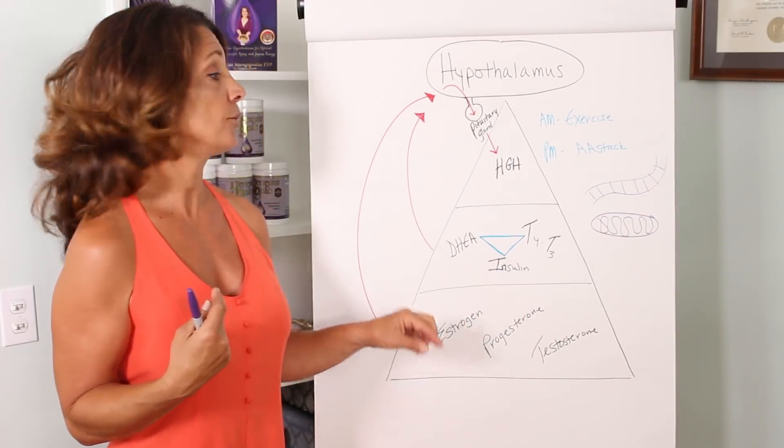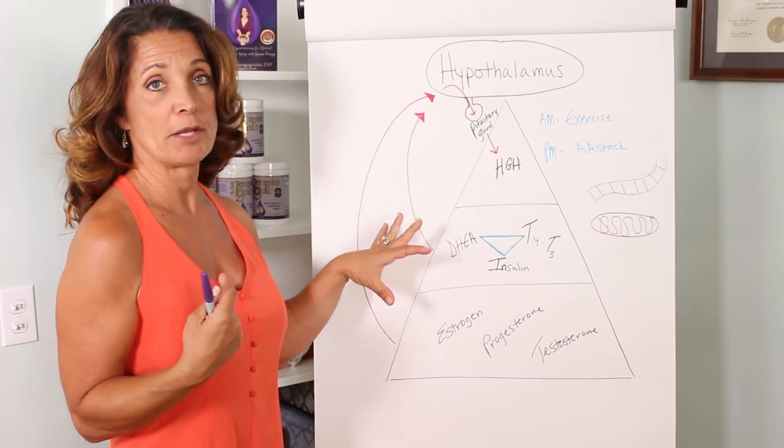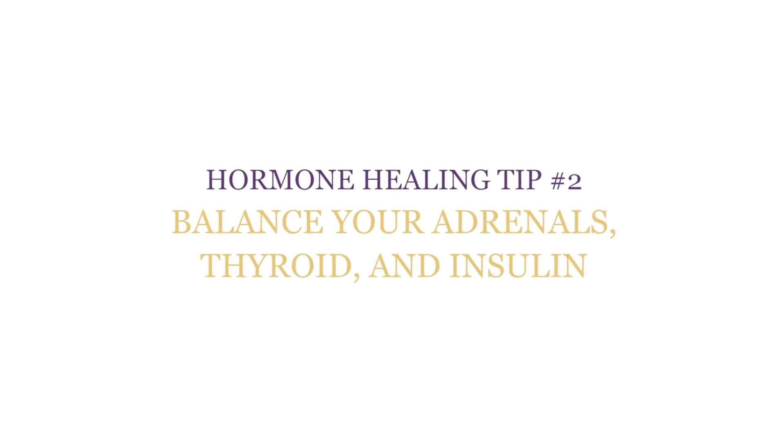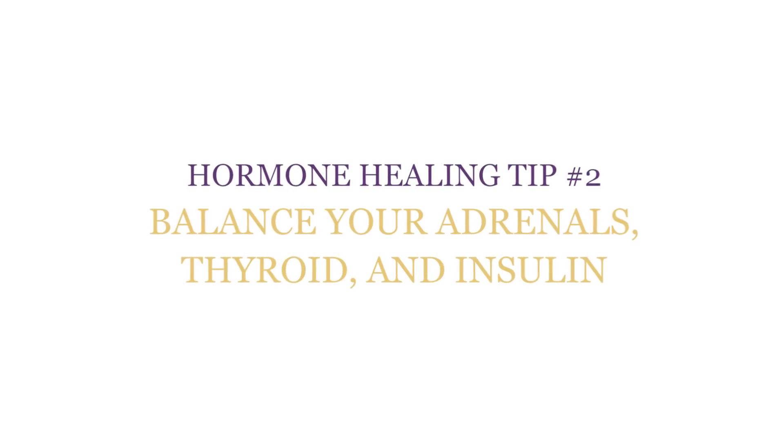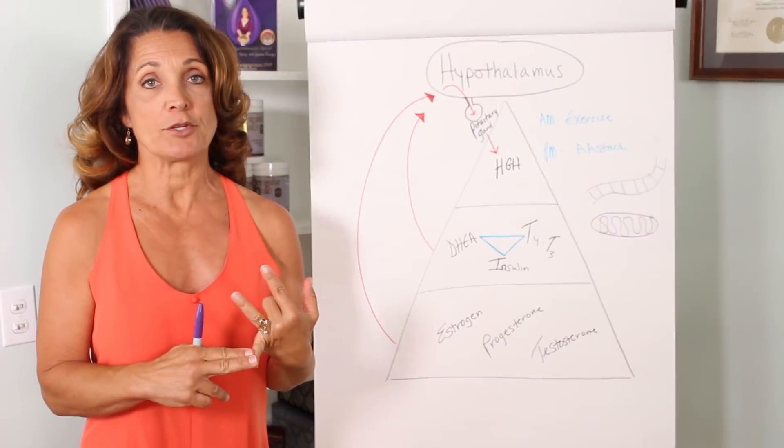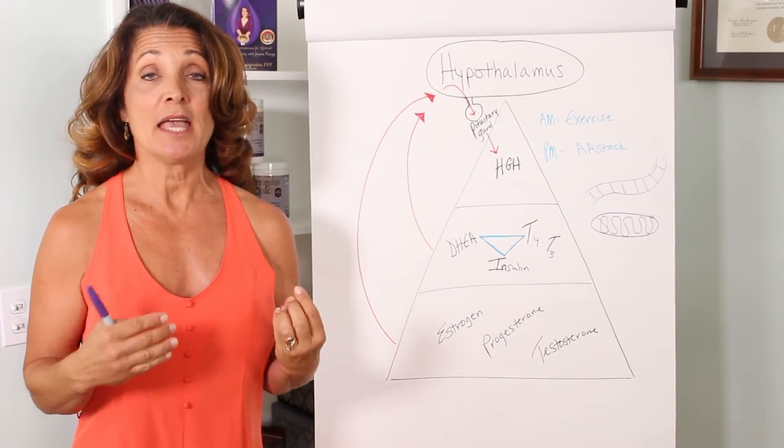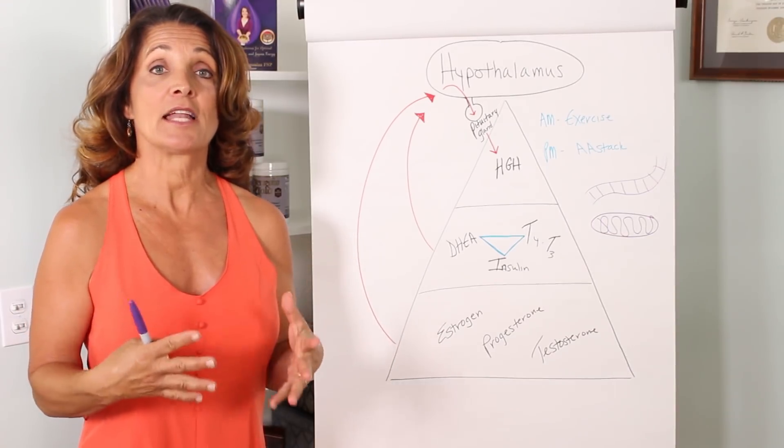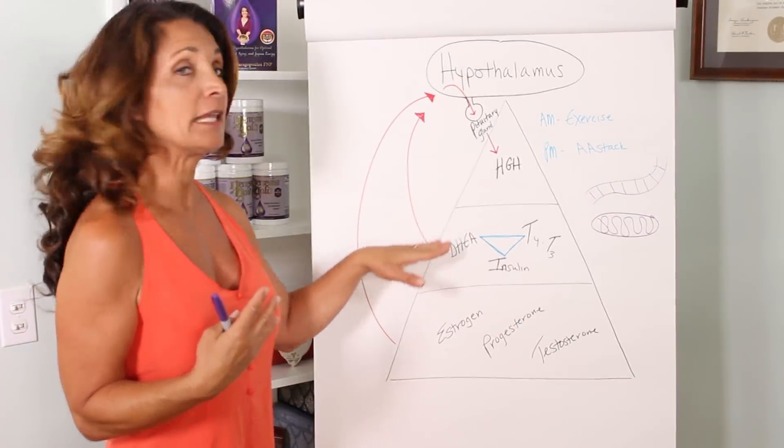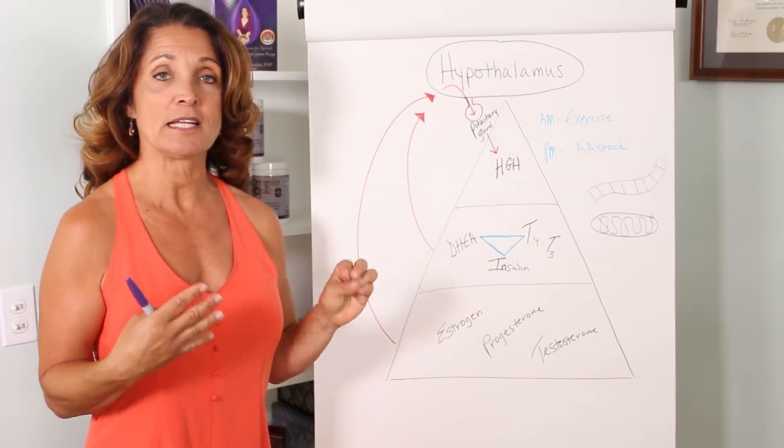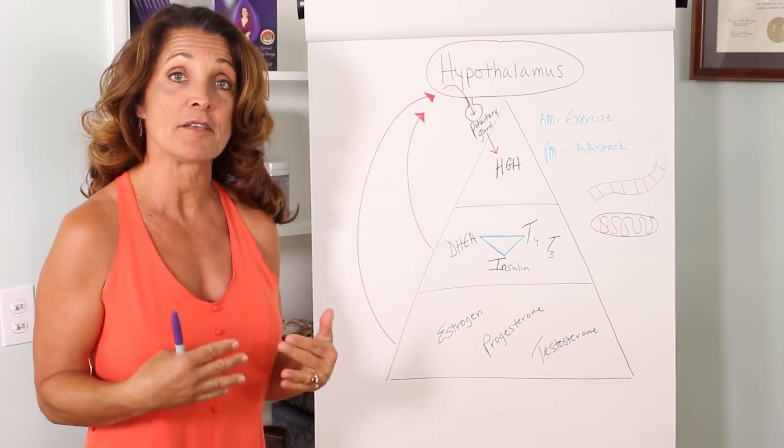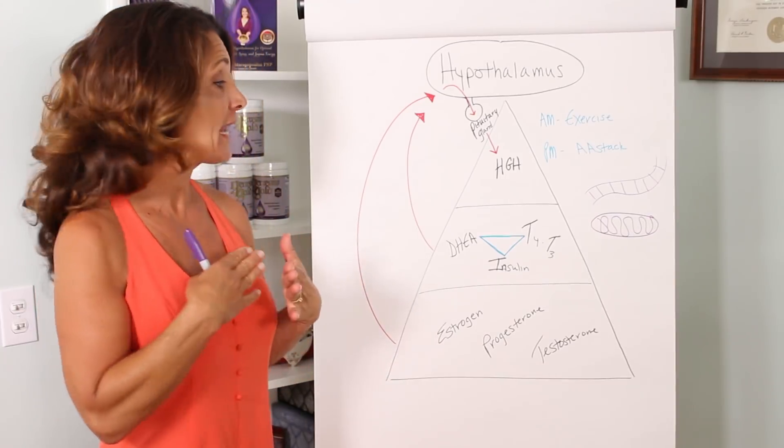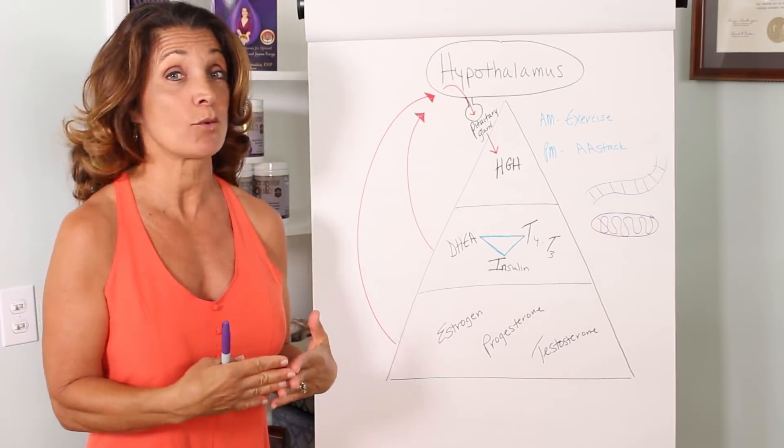Then you're going to go on to the middle section of the pyramid. And that is a triad of adrenals, pancreatic function, and thyroid. Your adrenal glands produce a hormone called DHEA that is androgenic and growth stimulating. These growth stimulating hormones actually are needed in order to build muscle and tissue.